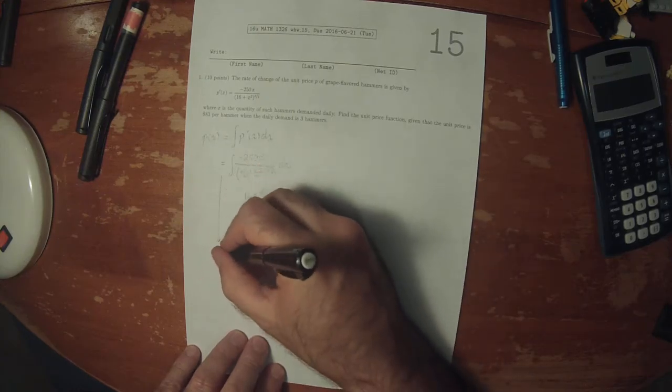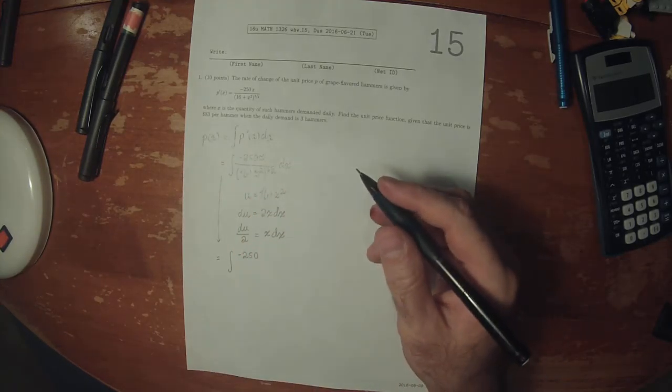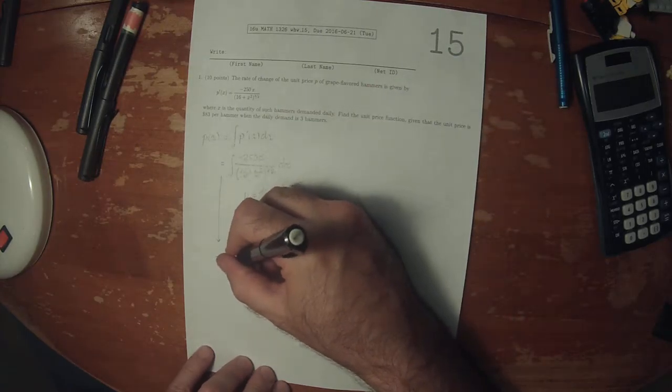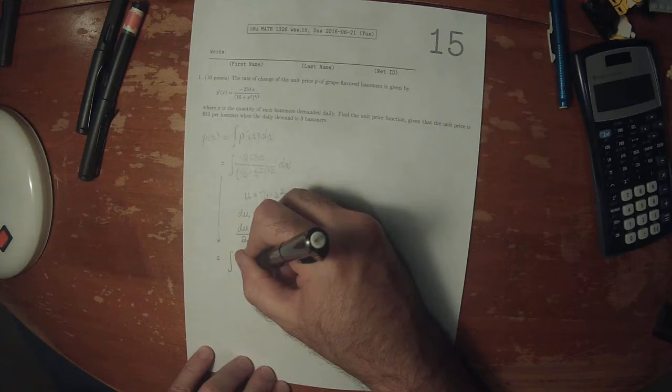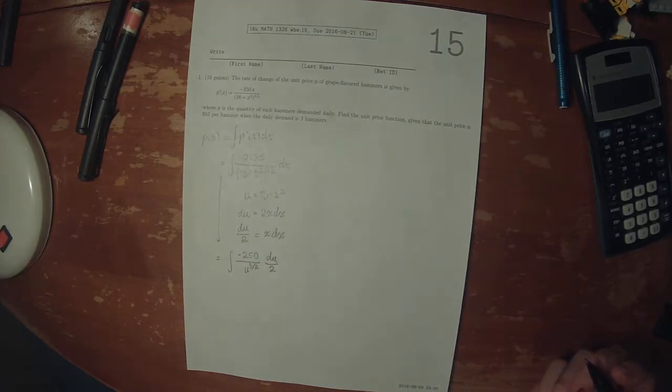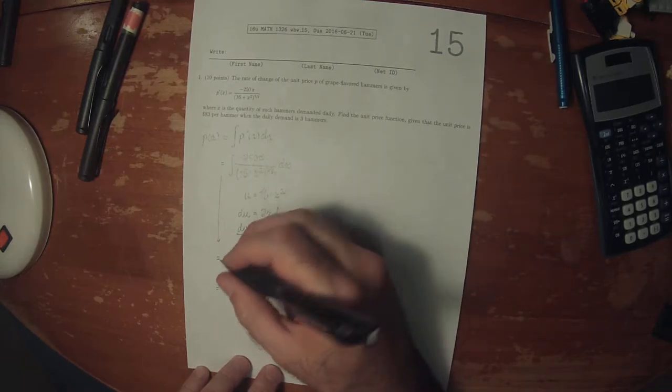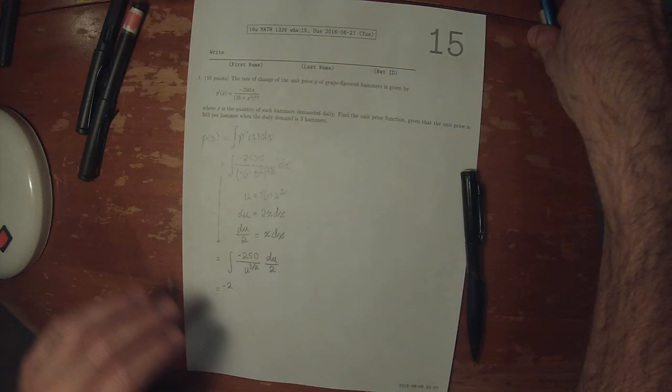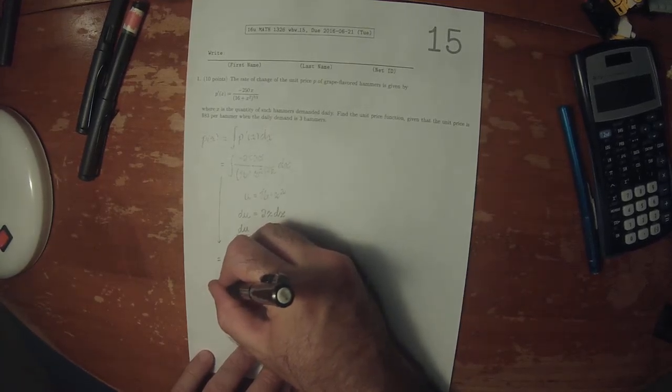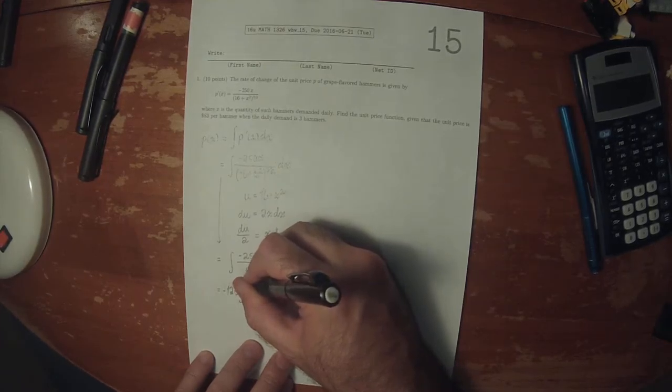Making that substitution, this is now anti-derivative negative 250. x dx is replaced by du over 2, this is now u to three halves, so du over 2. Simplifying a little bit, that's negative 125, anti-derivative u to negative three halves.